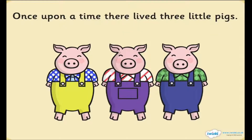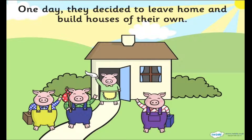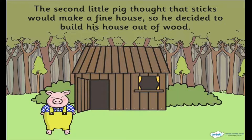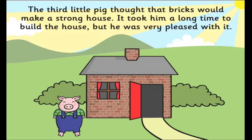The Three Little Pigs. Once upon a time, there lived three little pigs. One day, they decided to leave home and build houses of their own. The first little pig thought that straw would make a good house. He built the house very quickly and was very pleased with it. The second little pig decided to build his house out of wood. The third little pig thought that bricks would make a strong house. It took him a long time to build the house, but he was very pleased with it.